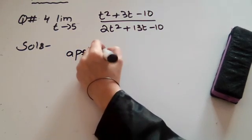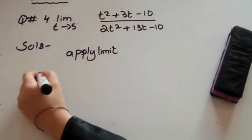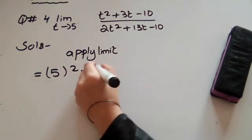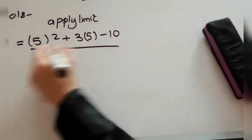We have to apply the limit. So if t is 5, we write the limit.